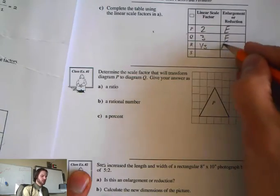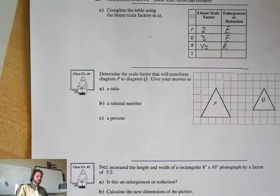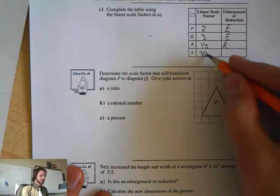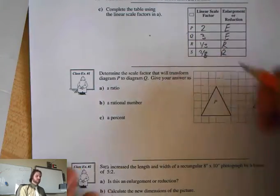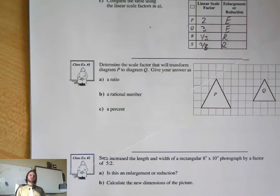R was a scale factor of 1 third, and that was a reduction. And S was a scale factor of 2 thirds, which also was a reduction. So if it's less than 1, it's a reduction. If it's greater than 1, it's an enlargement.